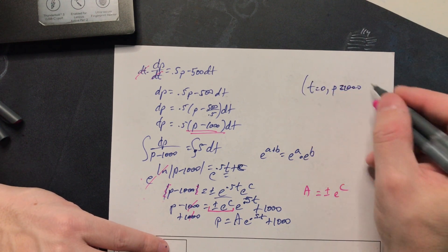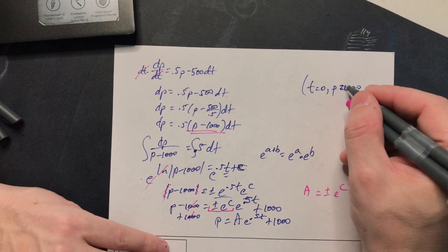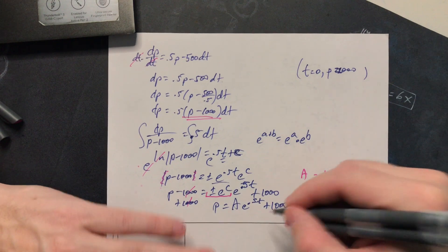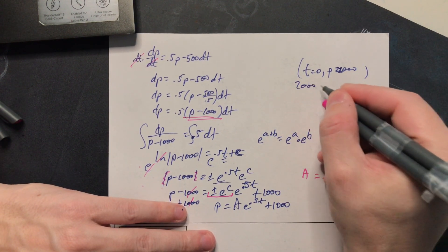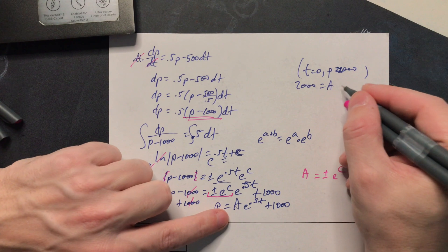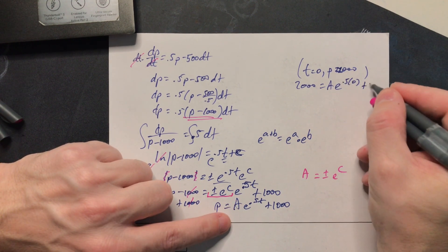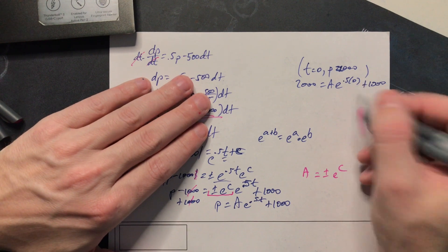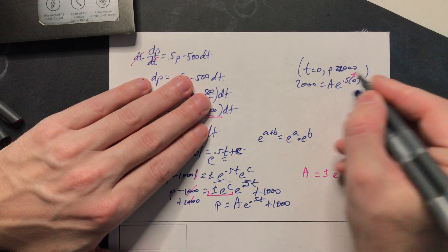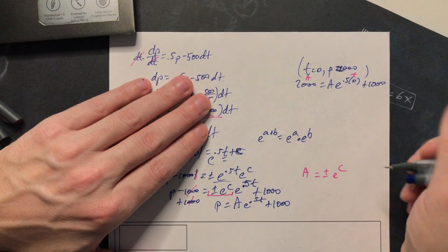So it's the point t equals zero p equals 2,000. Plug it in here so 2,000 for p and then e to the 0.5 times zero plus the 1,000. So this is your t right here and this is the value of p that we've been given.